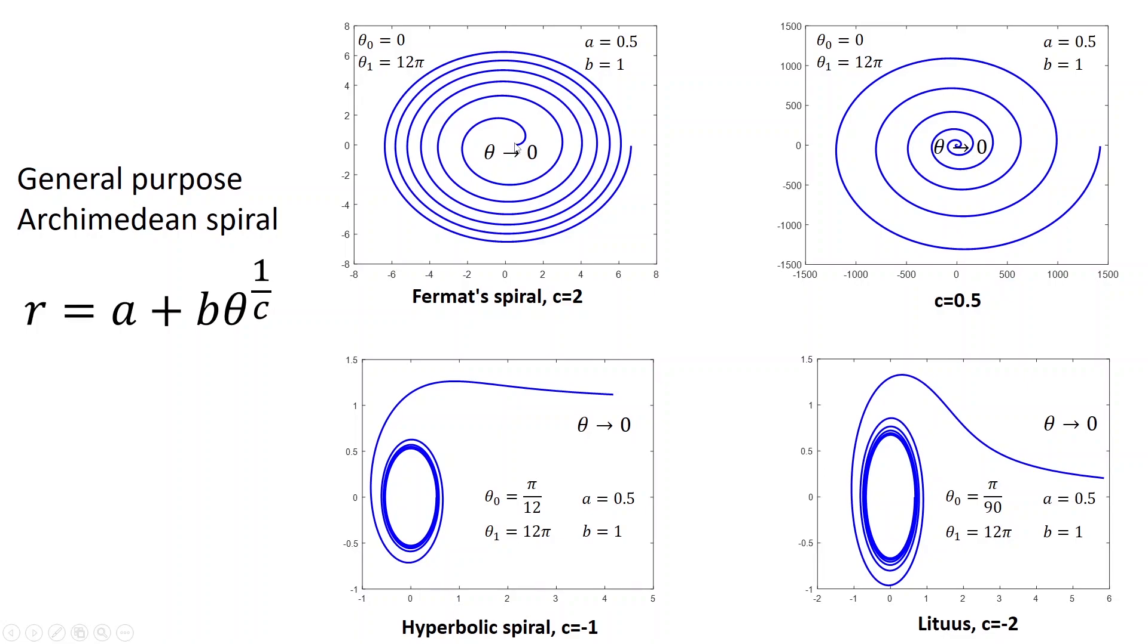So at theta equal to 0, it starts from somewhere here, and then it expands, but gradually the distance decreases. If c is larger than 0 but less than 1, this means the total power will be more than 1, and so the distance between the sections increases as the theta increases.